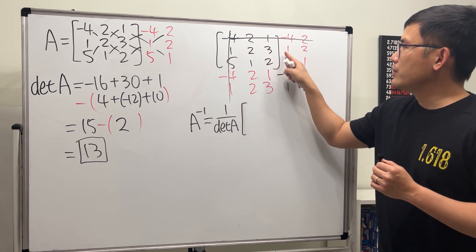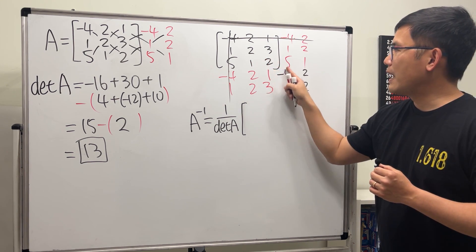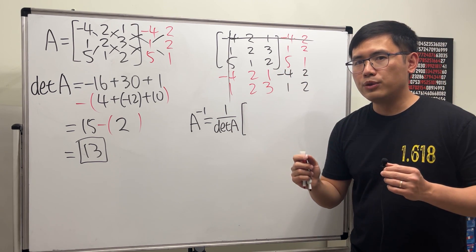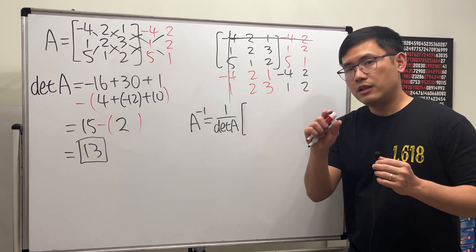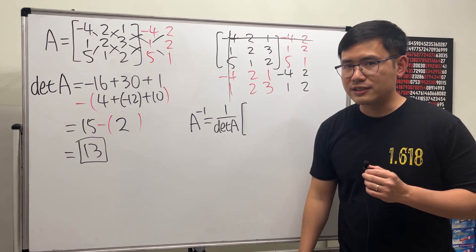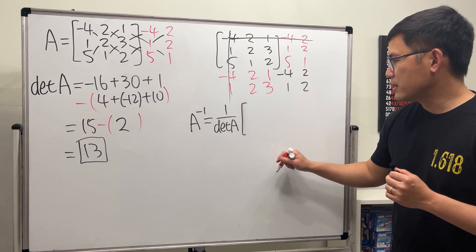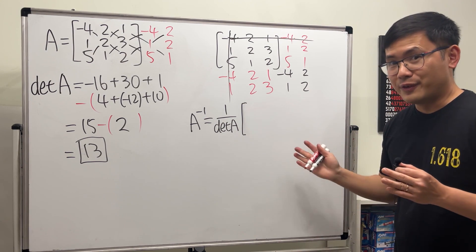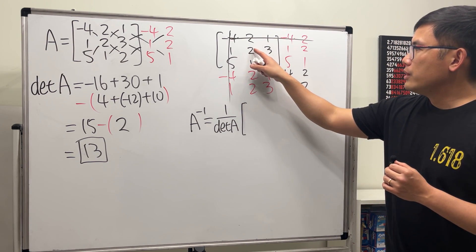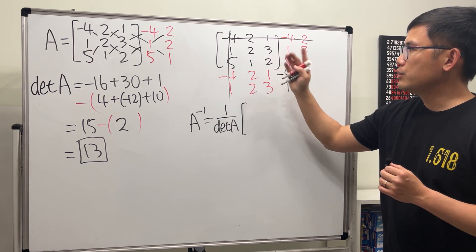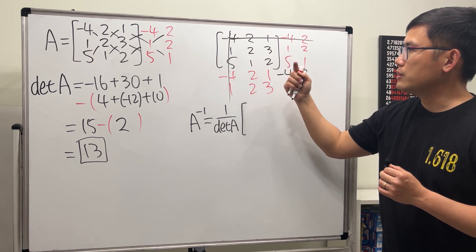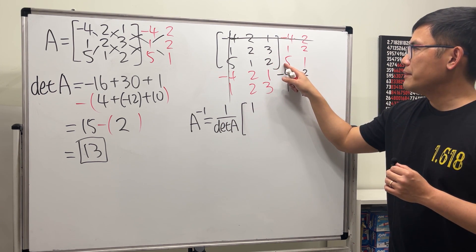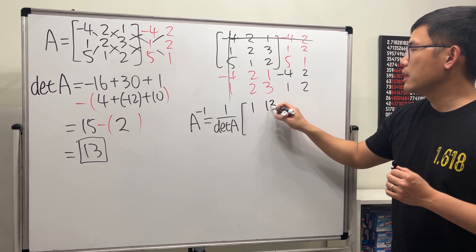We have a total of 9 two-by-two matrices, positions 1 through 9. You find the determinant of each of these 9 two-by-two matrices, and with this shortcut you don't have to worry about the sign from cofactor expansion. So the first 2x2 matrix: 2 times 2 is 4 minus 3 times 1, which is 4 minus 3, equals 1. Continue: 3 times 5 is 15 minus 2 is 13.